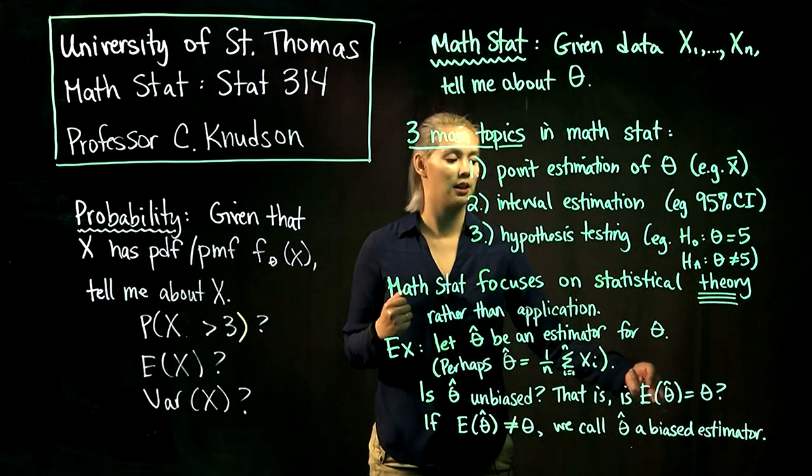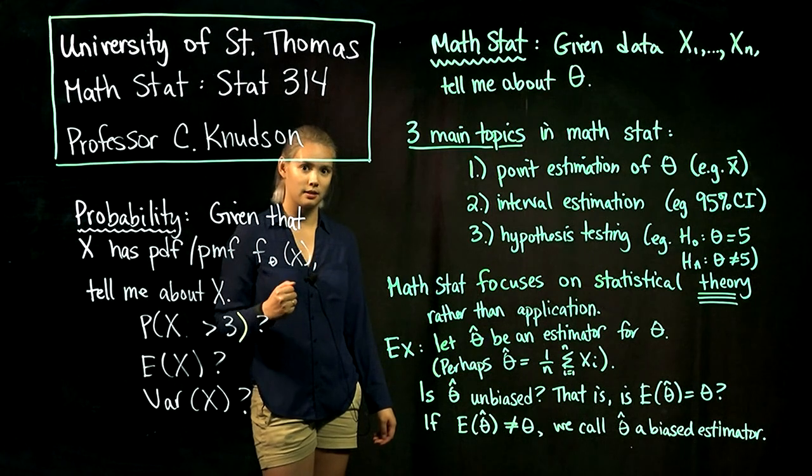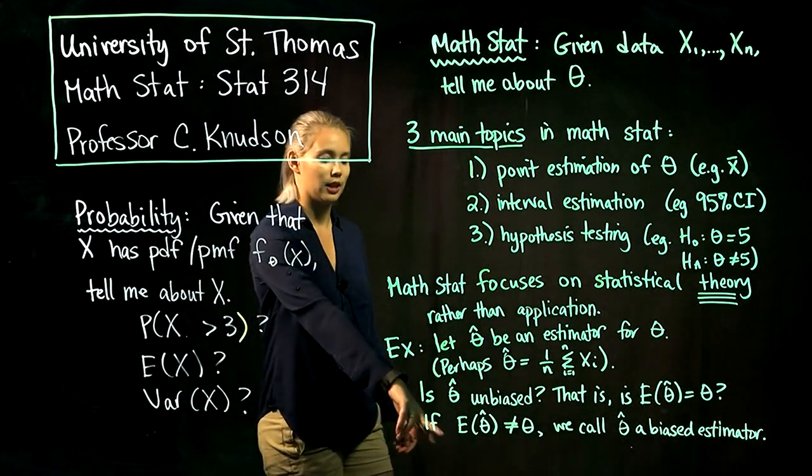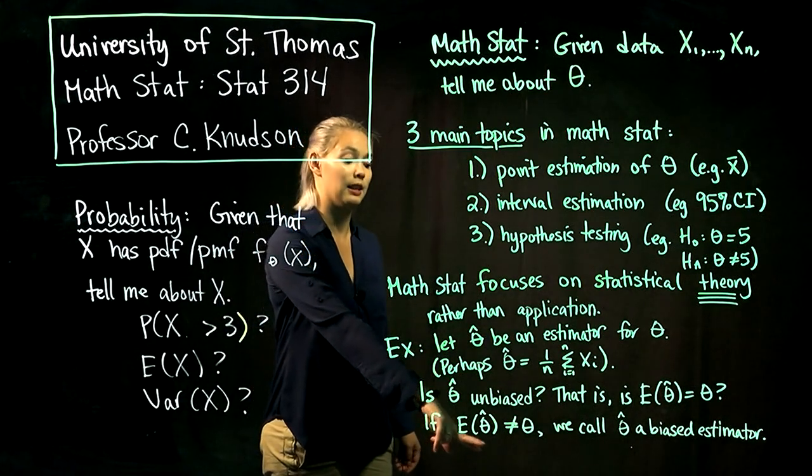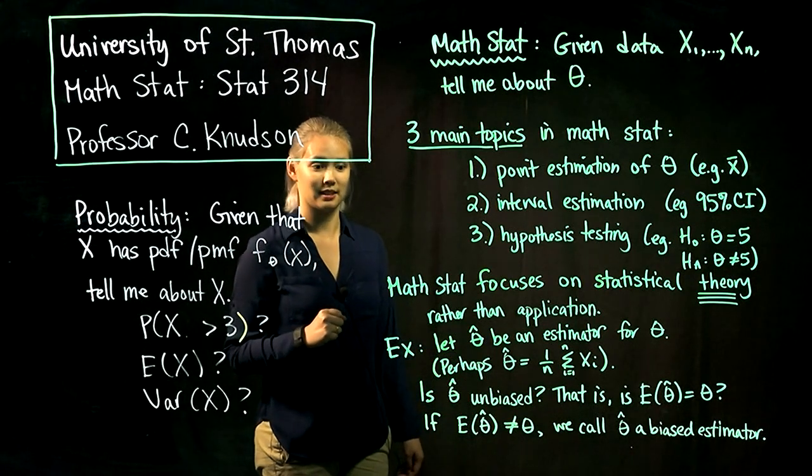If the expectation of theta hat is equal to theta, then we would call theta hat unbiased. However, if we calculate the expectation of theta hat and find that it is not equal to theta, we would say that theta hat is a biased estimator.